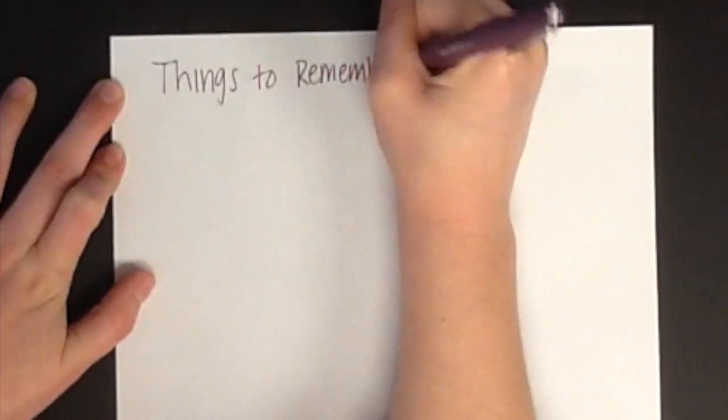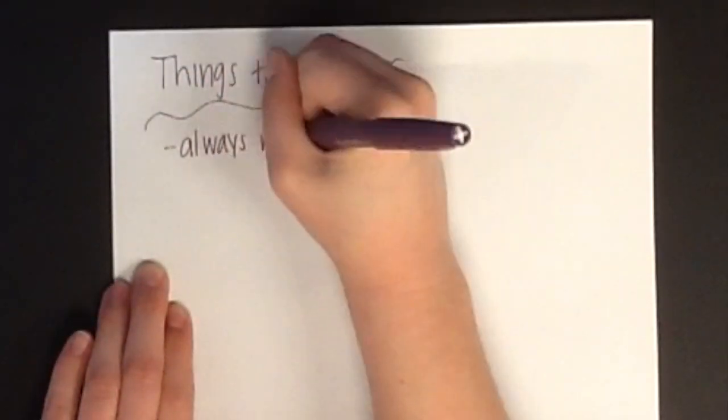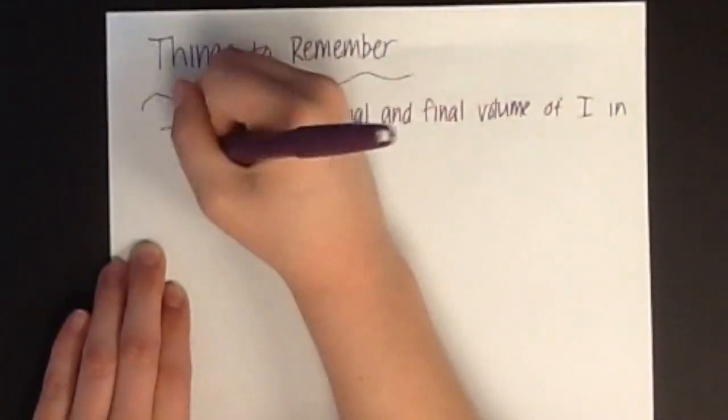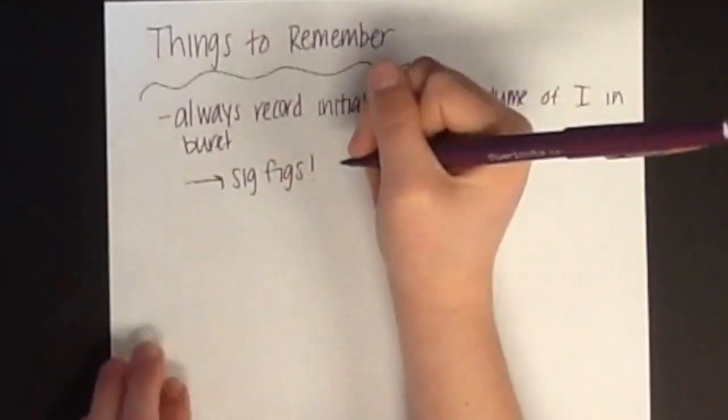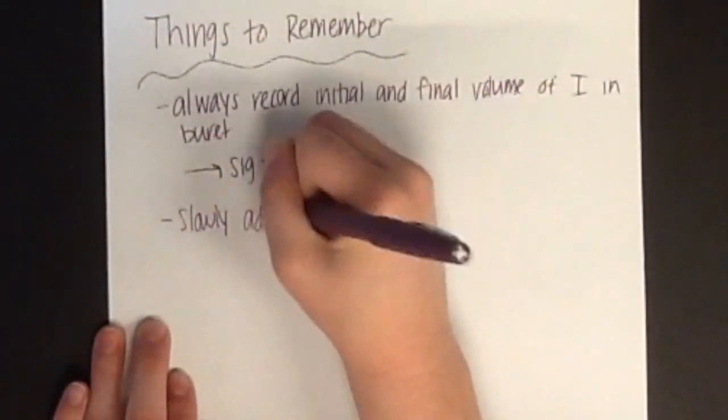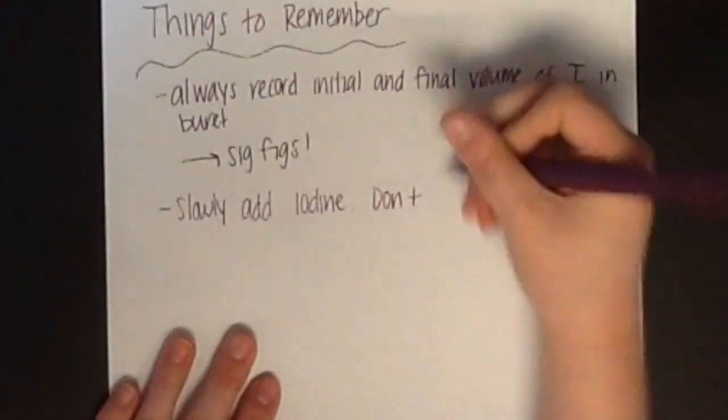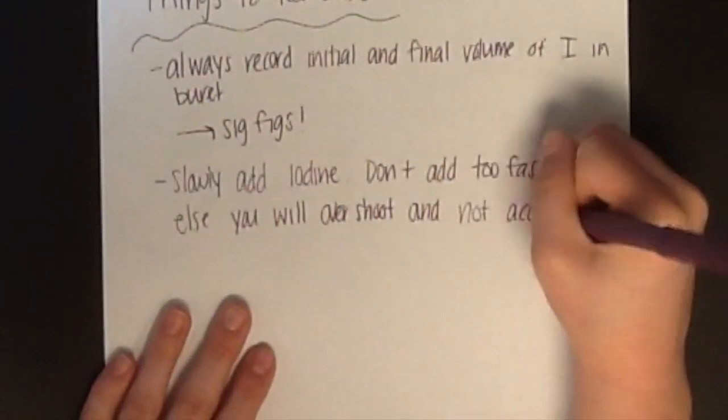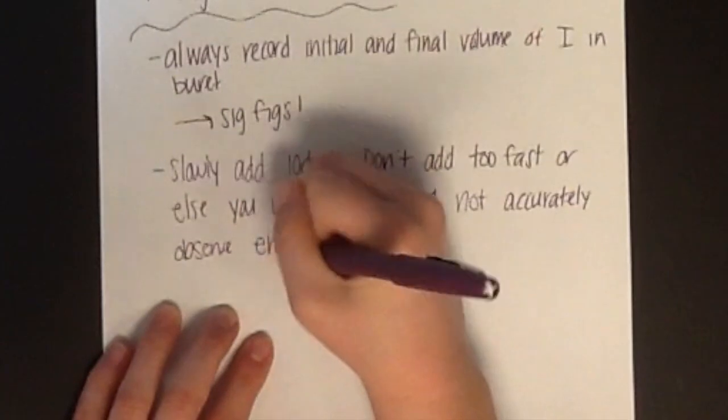Some things to remember include: 1. Always record the initial and final volume of iodine in the burette by using the correct number of significant digits. 2. Slowly add iodine by turning the stopcock. Adding too much, too fast, could cause you to overshoot and not accurately observe an end point.